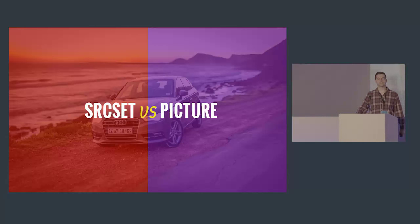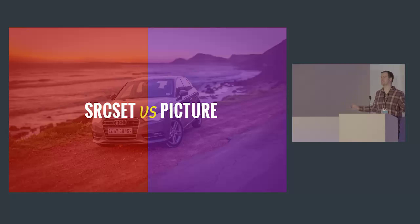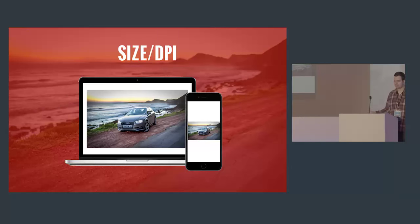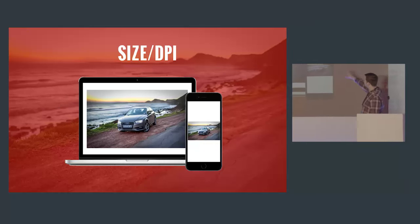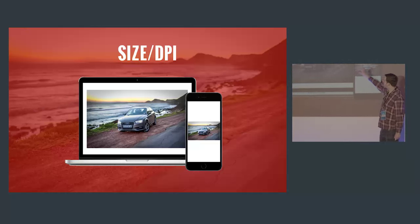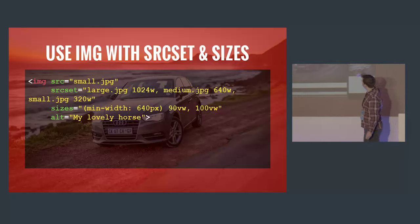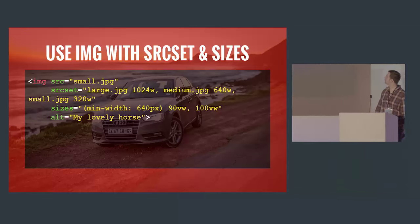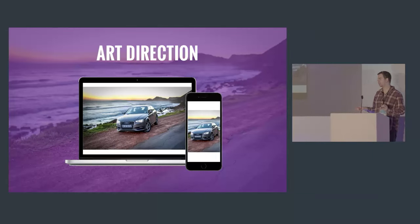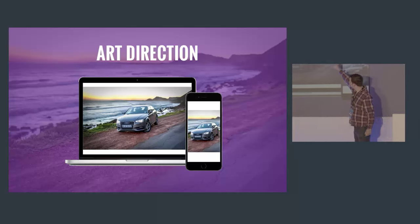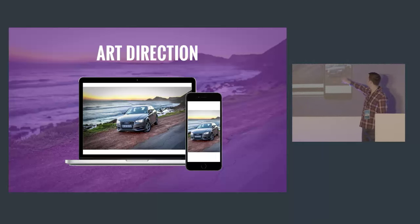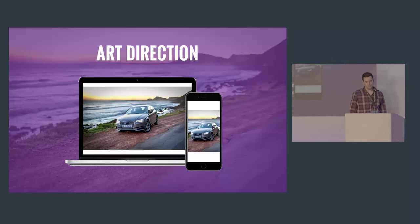What is the difference between srcset and picture? If we're dealing with size or DPI — the same image on a mobile device with the same background and same car — we should be using the img tag with the srcset attribute. We can also use the sizes attribute to specify image sizes at different breakpoints. If we're changing the art direction — say, zooming in on the car to highlight what we want the user to see — then we should use the picture element.